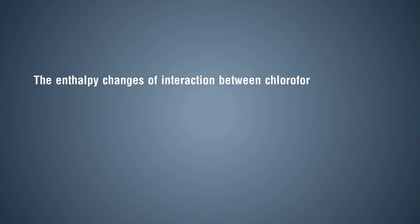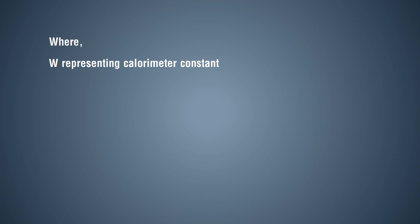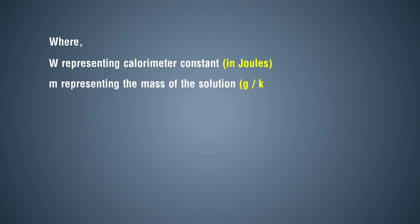Calculation: The enthalpy change of interaction between chloroform and acetone = W × (T3 − T1) + M1 × Q1 × (T3 − T1) + M2 × Q2 × (T3 − T2). Where W is the calorimeter constant in joules, m is the mass of the solution in grams or kilograms.